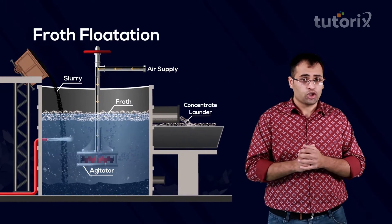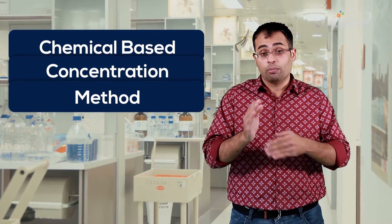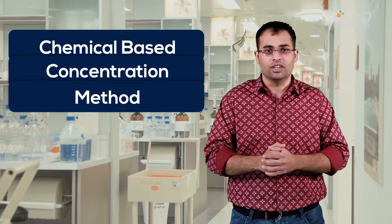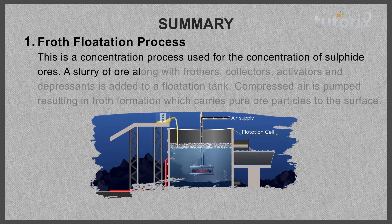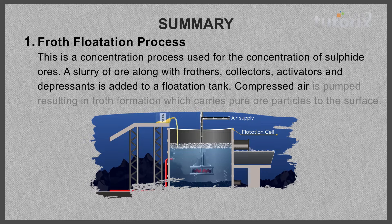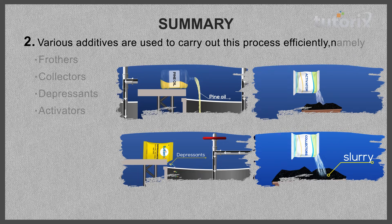In today's class, we learned about a concentration method called froth flotation, which is mainly used for the concentration of non-polar sulfide ores. In the next class, we will learn about a chemical-based concentration method. Let's do a quick recap of what we have learnt today. The froth flotation process is a concentration process used for sulfide ores. A slurry of ore along with frothers, collectors, activators, and depressants is added to a flotation tank. Compressed air is pumped in, resulting in froth formation which carries pure ore particles to the surface. The four additives used are frothers, collectors, depressants, and activators.